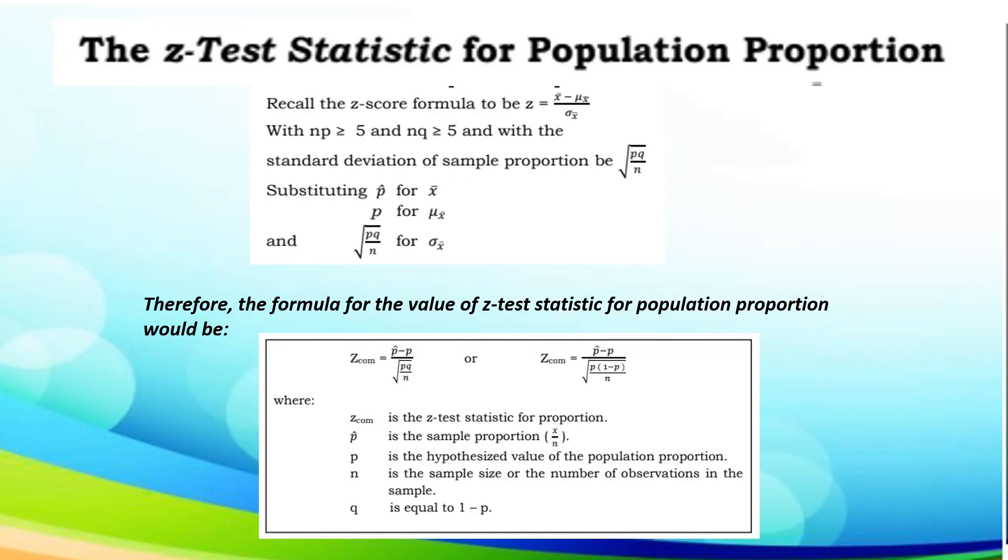Now, let us discuss the z-test statistic for population proportion. Let us recall the z-score formula to be z equals x-bar minus mu all over sigma. With np is greater than or equal to 5 and nq is greater than or equal to 5, and with the standard deviation being the square root of pq over n. Substituting p-hat for our given x-bar and p for mu, we get z-com equals p-hat minus p over the square root of pq over n. Where z is the z-test statistic, p-hat is the sample proportion, p is the hypothesized value, n is the sample size, and q equals 1 minus p.